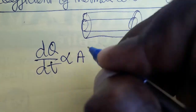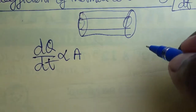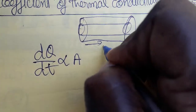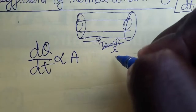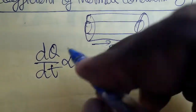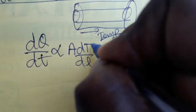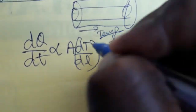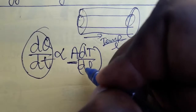Another thing is temperature gradient. What is temperature gradient? It is changing the temperature with respect to the length — that is called temperature gradient. So heat transferring depends on dT by dL, which is the temperature changing with respect to the length.